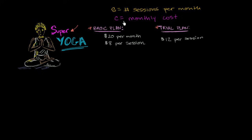With these variables defined, let's think about how much I would pay under each of these plans depending on how many sessions I attend. Let's start with the trial plan, because that seems a little simpler. I'll draw a table with number of sessions and cost for the trial plan, and also for the basic plan so we can compare.